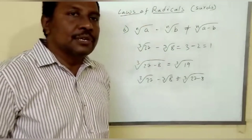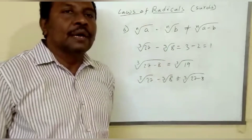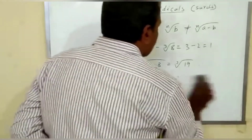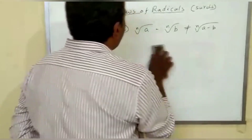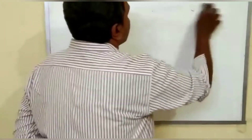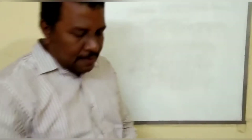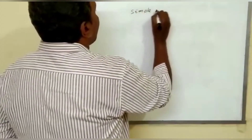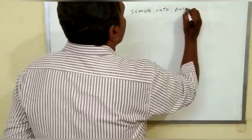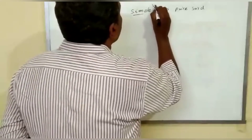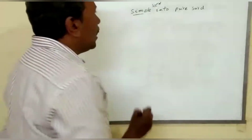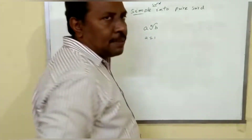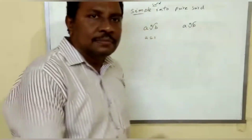From this we understand: nth root of A plus nth root of B is not equal to nth root of A plus B, and nth root of A minus nth root of B is not equal to nth root of A minus B. The laws are complete. The next topic is converting a simple surd into a pure surd. A pure surd is of the form A·nth root of B where A equals 1, whereas a mixed or simple surd has A not equal to 1.